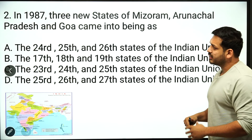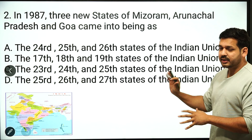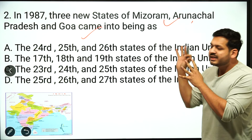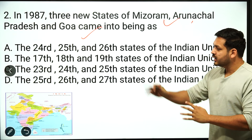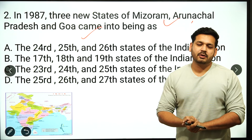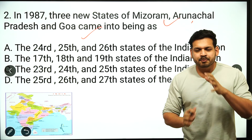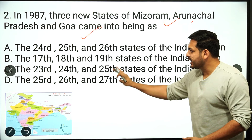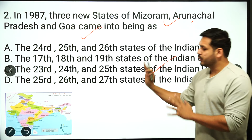Let's move on to the second question. In 1987, three states were created — Mizoram, Arunachal Pradesh, and Goa. I have asked you: which number states were these? Were they the 24th, 25th, 26th or 17th, 18th, 19th or 23rd, 24th, 25th or 25th, 26th, 27th states? I asked you about counting — how many states were Mizoram, Arunachal Pradesh, and Goa?